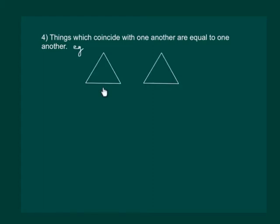For example, consider these two triangles. Now, let us see if they coincide with one another. Clearly, since the two triangles coincide with one another, so they are equal to one another.